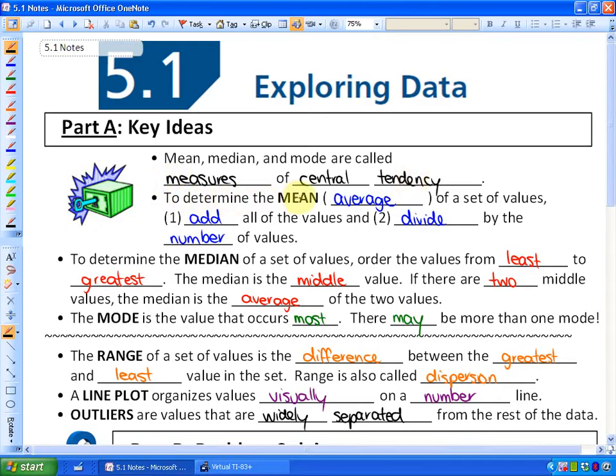To determine the mean, which is also called the average, of a set of values, you first add all the values and then divide by the number of values.